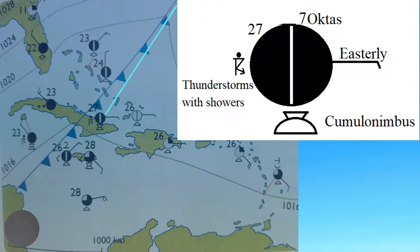Looking at the weather station over eastern Cuba, we can better understand what conditions are like at the arrival of the cold front. The cloud cover is now 7 octas, which means that it is almost overcast. The current weather condition is a thunderstorm with showers. And though the temperatures are still generally high at 27 degrees Celsius, on some synoptic charts we will see the temperatures drop at this point. The wind is still blowing from the east.